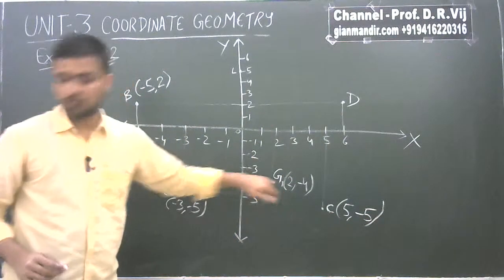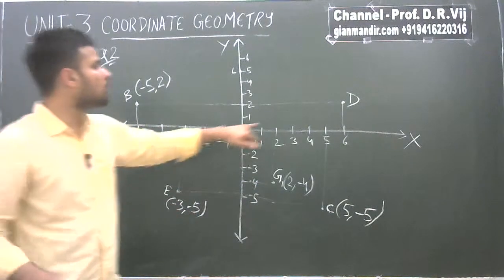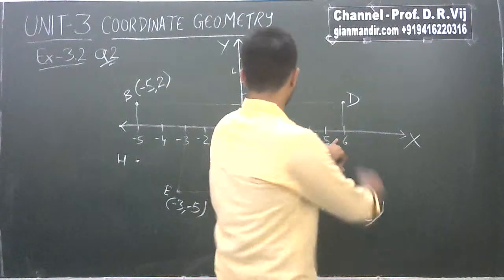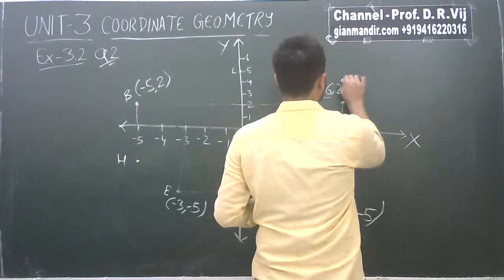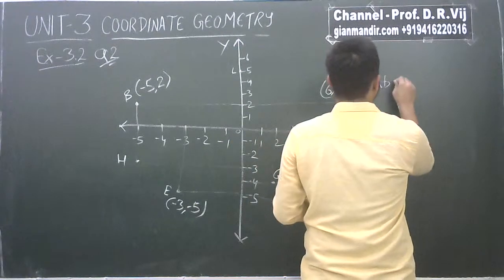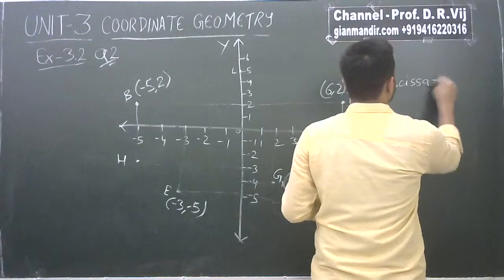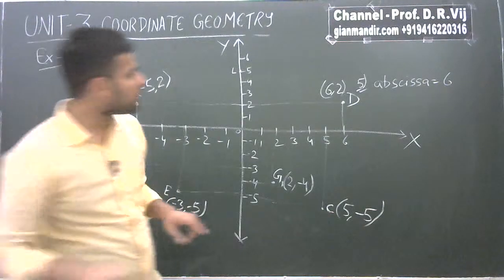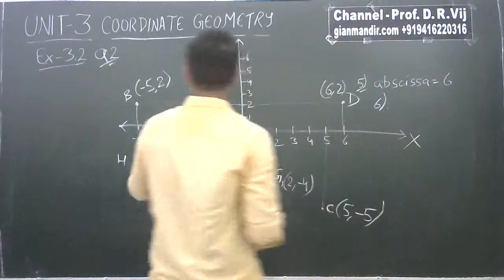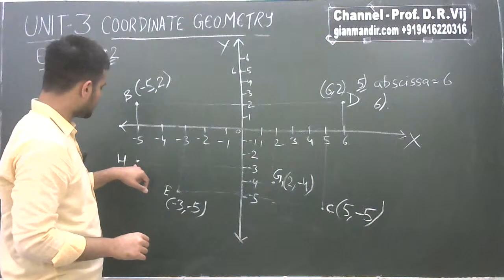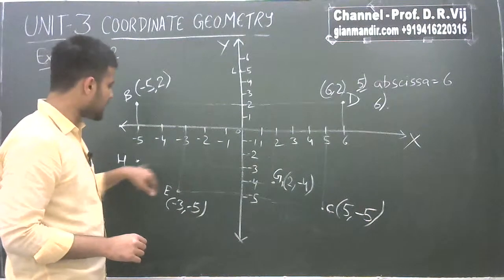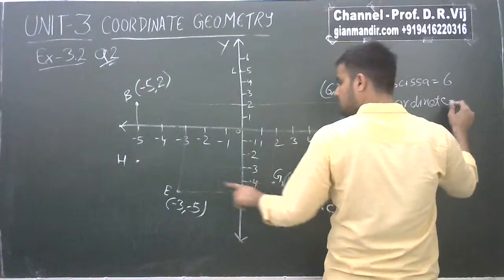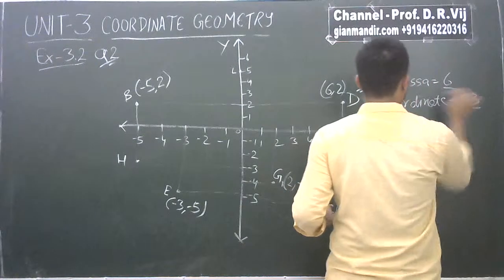Fifth part: abscissa of point D. The abscissa is the X coordinate. The coordinates of D are (6, 2), so the abscissa equals 6. Sixth part: ordinate of H. The ordinate is the Y axis value. H is at (-5, -3), so the ordinate of H is minus 3.